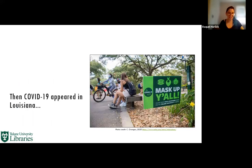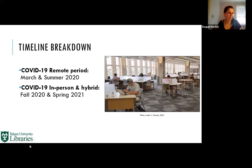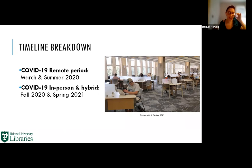COVID-19 appeared in Louisiana and things started to look different on campus. I've divided our timeline into two periods: the COVID remote period—March 2020 through summer 2020—and the COVID-19 in-person and hybrid period—fall 2020, spring 2021, and now. This photo was taken by my colleague Jane Pinzino earlier this week, giving a sneak peek of what it looks like here.